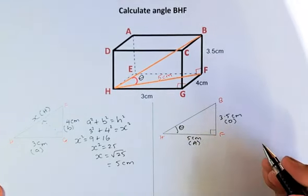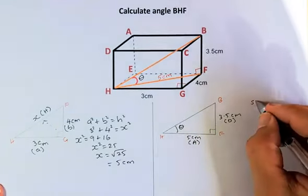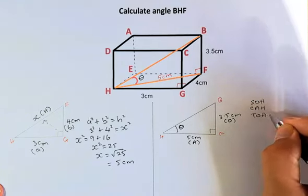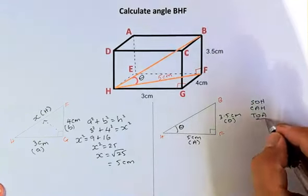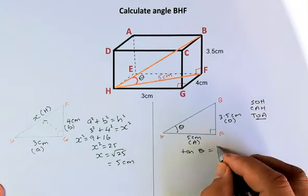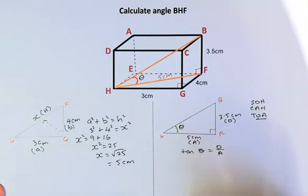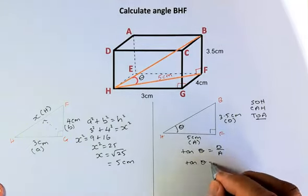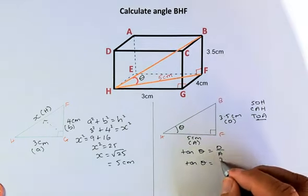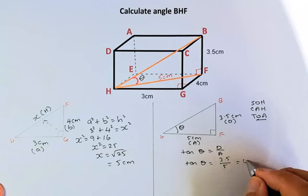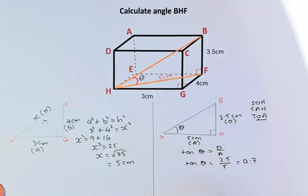So to solve this, we can use the formula SOHCAHTOA. Because we have O and A, we have to use the tangent formula. So tangent theta equals to opposite over adjacent. The next step, we're going to substitute in the value. So tangent theta equals to O, which is 3.5. And A is going to be 5. Putting in your calculator is going to be 0.7. So tangent theta is 0.7.